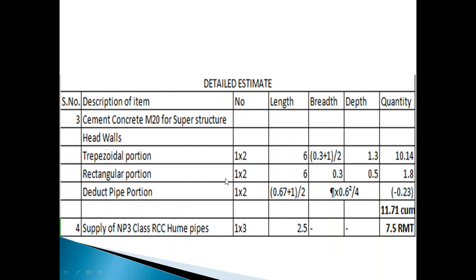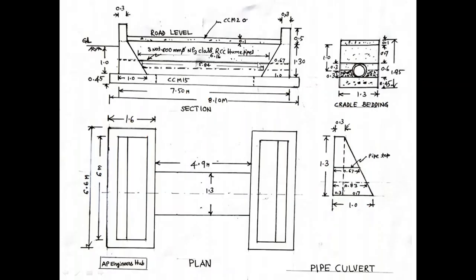This is pipe portion. You see, at this level, that is at 0.6 meter, 0.67, bottom of this 1 meter, into the area of pipe.